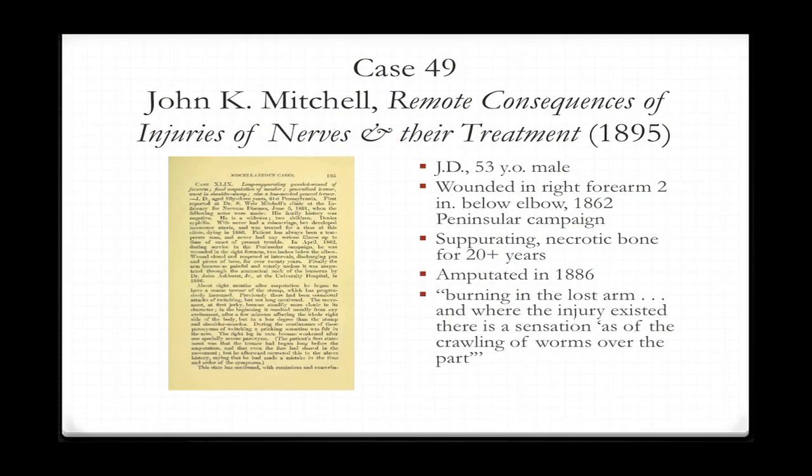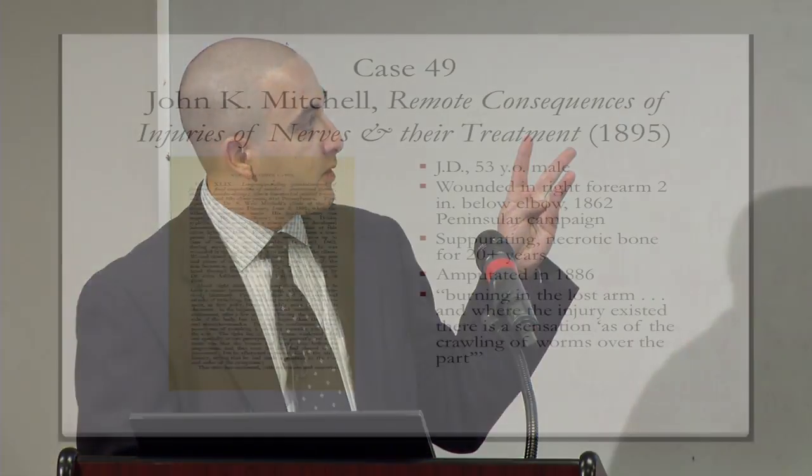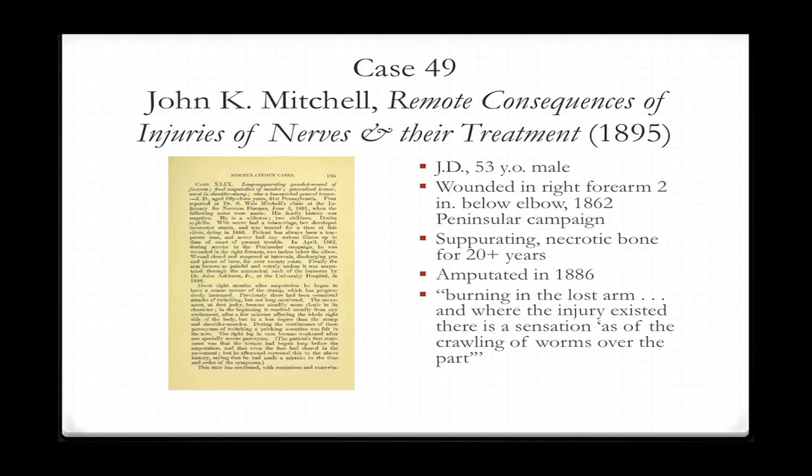Case 49 is J.D., a 53-year-old male wounded in the right forearm two inches below the elbow in the 1862 Peninsular Campaign. He had separating necrotic bone for about 20 years — an unfortunately common injury from a Minié ball. Minié balls were the major type of rifle shot used in the Civil War. They caused terrible injuries because they exploded upon impact, especially causing devastating bone injuries.